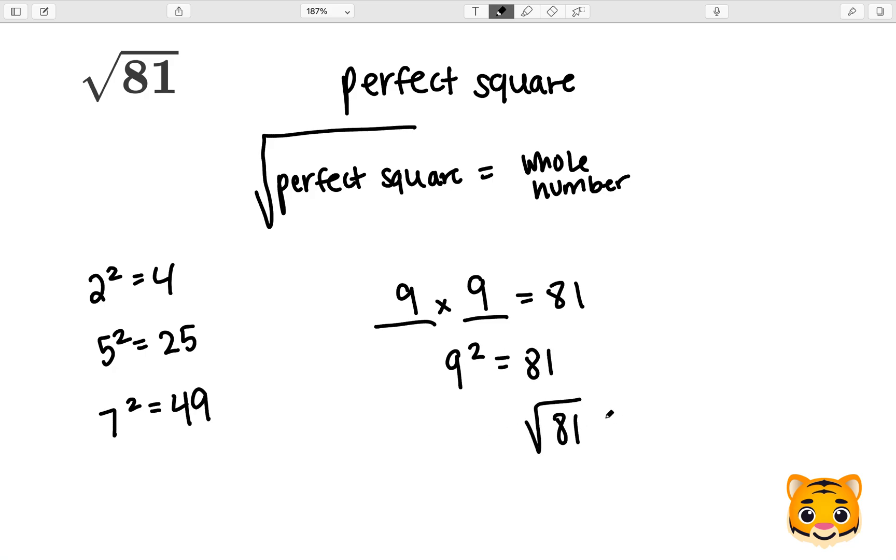Therefore, the square root of 81 is just 9. This requires no further simplification or estimation, as the square root of 81 is exactly 9.